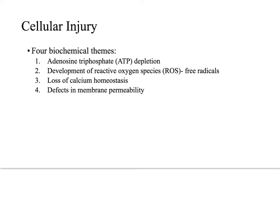Cell response to injury is not an all-or-nothing phenomenon. The stronger and longer the stimulus, the larger the damage. Response to a given stimulus also depends on the type, status, and genetic makeup of the injured cells. For instance, if a skeletal muscle experiences ischemia, it can tolerate two hours before there is irreversible injury. But cardiac muscle can only tolerate 20 minutes before it experiences irreversible injury due to the specific type, status, and genetic makeup of the cell.